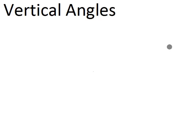So with vertical angles, you probably have some prior knowledge about the word vertical and some prior knowledge about the word angle. Vertical angles are a combination of those two words. Vertical means straight up and down. For example, that is a vertical line.